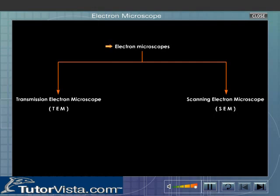The electron microscopes are of two types, namely Transmission Electron Microscope and Scanning Electron Microscope.